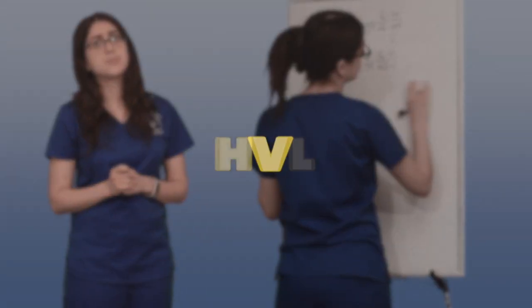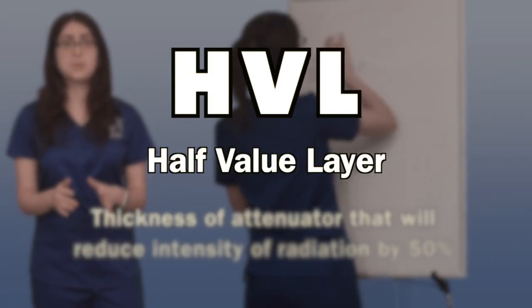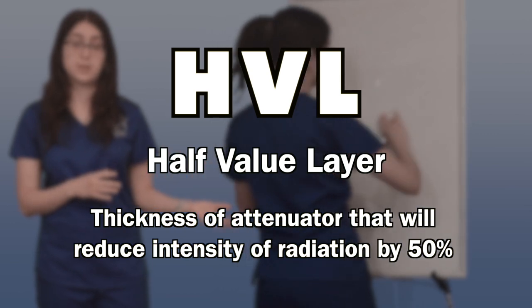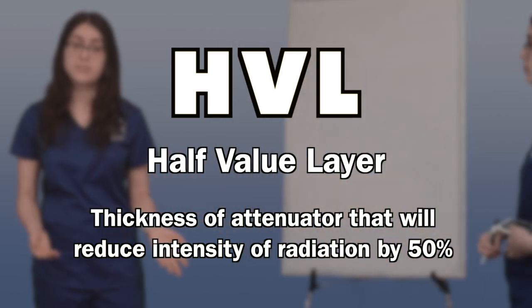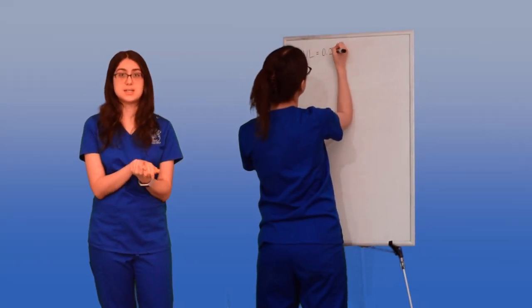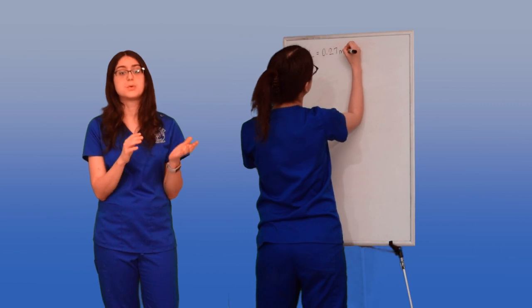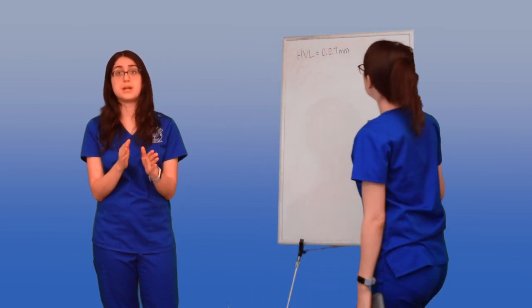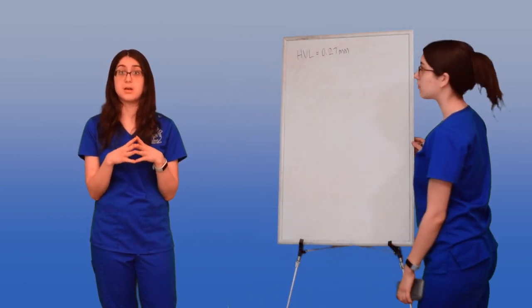Also, we can talk shielding. A half value layer is the thickness of an attenuator that will reduce the intensity of a beam of radiation by half. This is a set number for each attenuator for each radionuclide. I'm going to use lead as my attenuator, and I have technetium 99m as my radioisotope. The half value layer for this combination in particular is 0.27 millimeters.